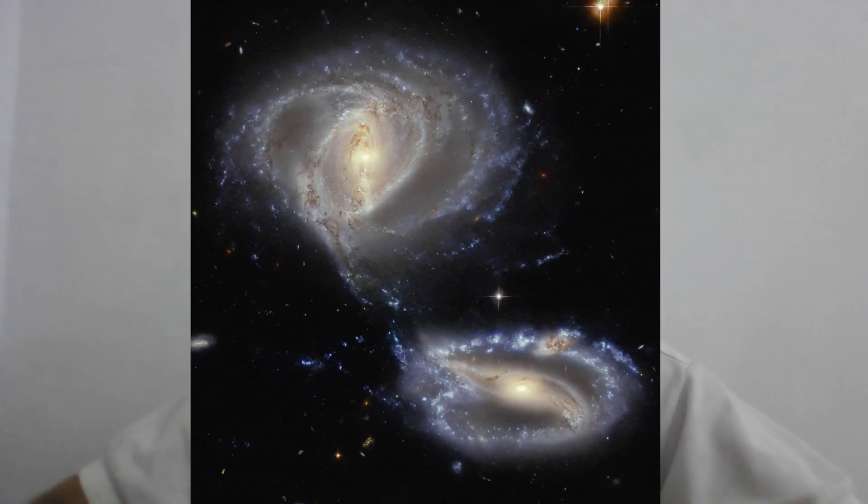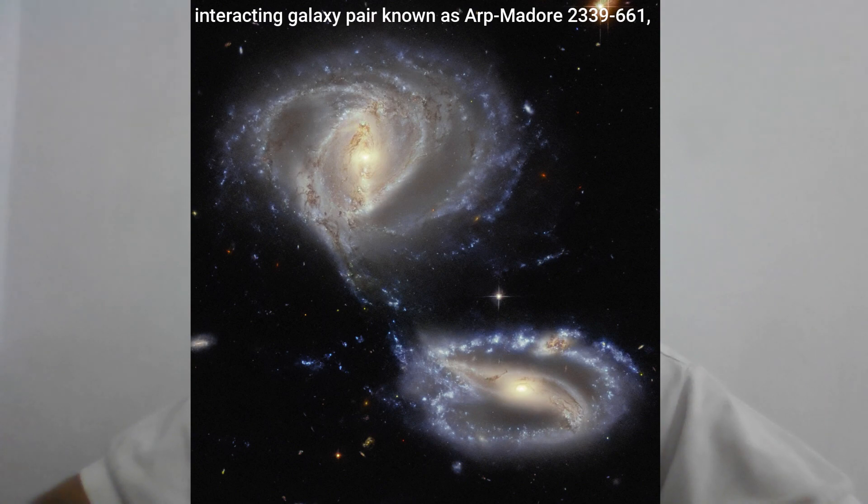Hello friends, NASA's Hubble Space Telescope captured the interacting galaxy pair known as Arp-Madore 2339-661, so named because they belong to the Arp-Madore catalogue of peculiar galaxies.